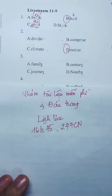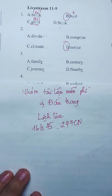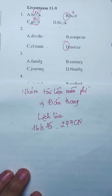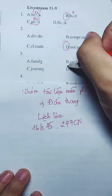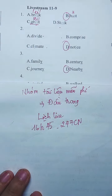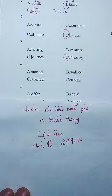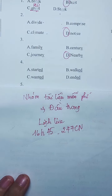Bây giờ mình qua câu số 3. Câu số 3 đáp án A, chắc bạn nào cũng biết đọc. Chúng ta có từ 'Family'. B là 'Century', C là 'Journey' - đều có Y. Còn D mình đọc là 'Nearby'. Xong 3 câu phát âm, bây giờ câu số 4.